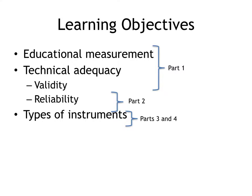In this series of lectures, I've broken it into four parts. In part one, I'm going to talk about educational measurement and what I mean by technical adequacy, and then I'll start to discuss validity. In part two, I'll discuss reliability and how that fits with validity. And in parts three and four, I'll take a deeper look at the kinds of instruments you'll run into for measurement in educational research.